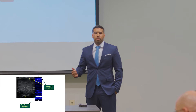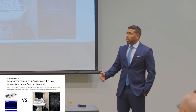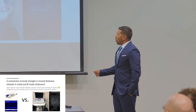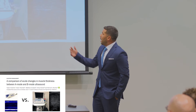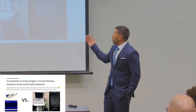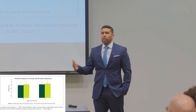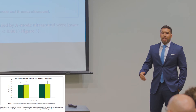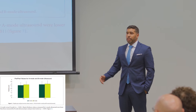That led us to design our first study, where we compared these two modes and wanted to see if the A mode can detect the same changes as the B mode. Subjects came to our lab, trained, we induced swelling, and then we measured and compared between them. Good news for labs that don't have the B mode — the more advanced technique — the A mode can detect the same acute changes as the B mode. As you can see in these bars, there are no significant differences, and that's why we suggested that A mode can be used to detect acute changes in muscle thickness.